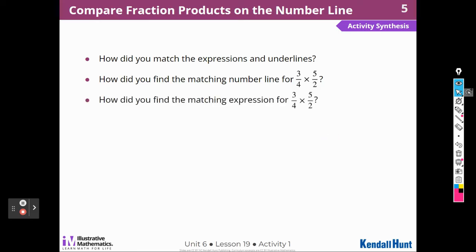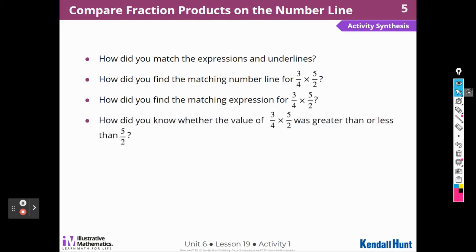How did you find the matching expression and number line? I saw that two of the number lines have five-halves on them and looked for the number line that showed three-fourths of five-halves. I knew which one it was because three-fourths of five-halves is less than five-halves. How did you know whether the value was greater than or less than five-halves? Because three-fourths is less than one, so less than one times five-halves is going to be less than five-halves.